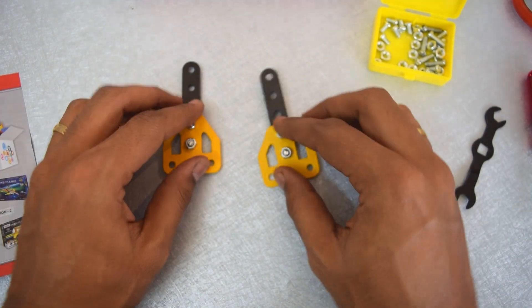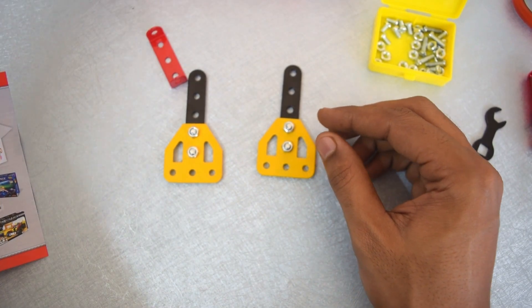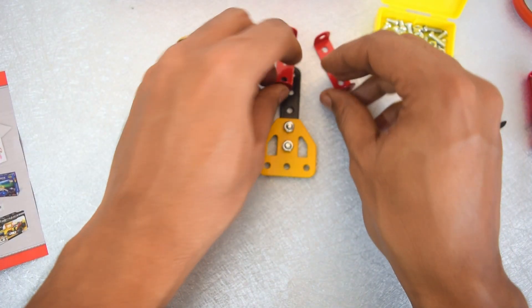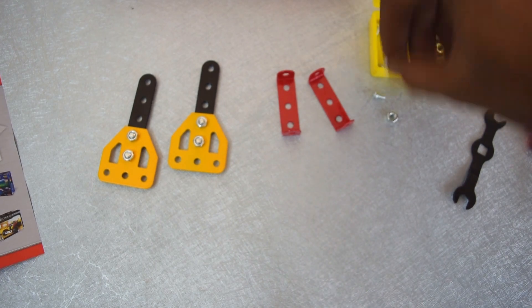Step one is complete. It was really simple, simpler than any other beginner kit that I've built. Step two requires two pieces of these red clips and four pieces of nuts and bolts.